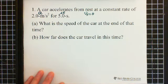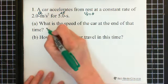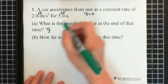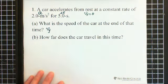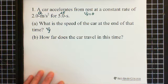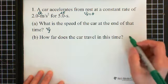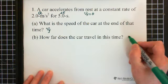So what is the speed of the car at the end of that time? That means at the end of 5 seconds, we're looking for V final when t equals 5 seconds. And for question B — how far does the car travel? During 5 seconds, we're looking for delta d.